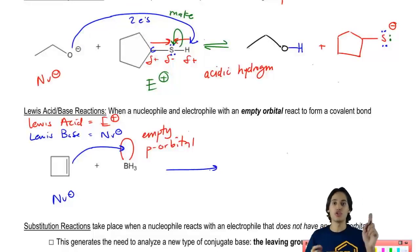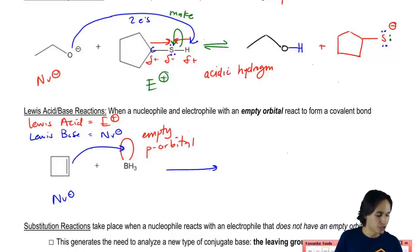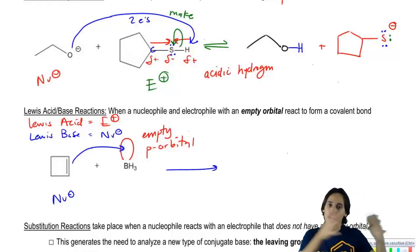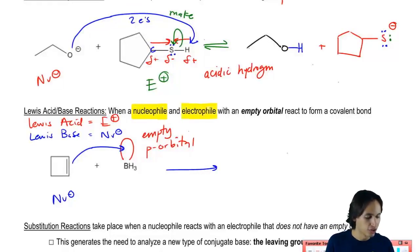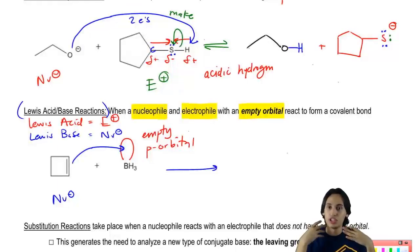When you have an exchange of hydrogens, you use an equilibrium sign because the hydrogen could go from one place to another and then it could go back. But with Lewis acid-Lewis base, there's no exchange. As you can see from my description, when a nucleophile and an electrophile react with an empty orbital, that's called a Lewis acid-Lewis base.